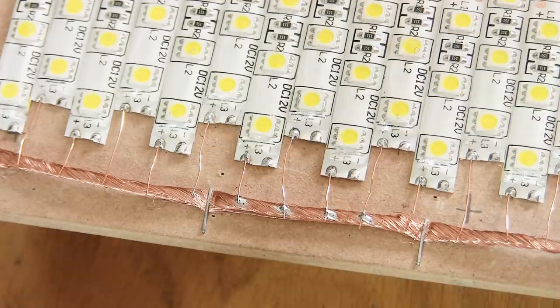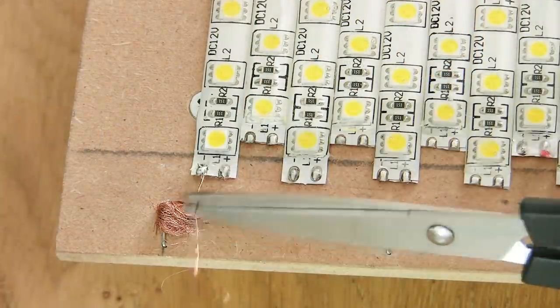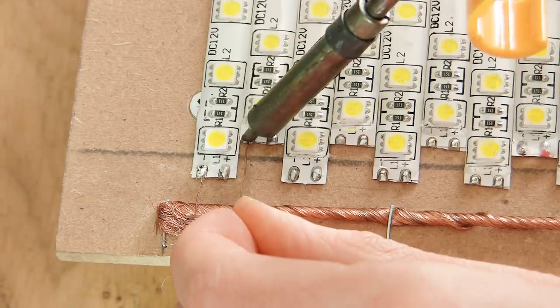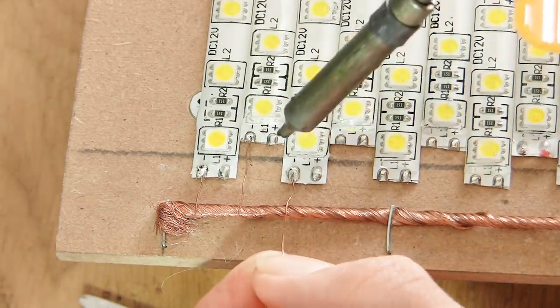After you've finished the left side of the panel, move around to the right side and follow the same procedure, but this time using the negative marked contacts on the strips.